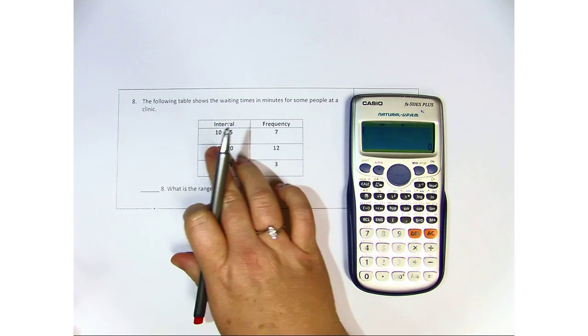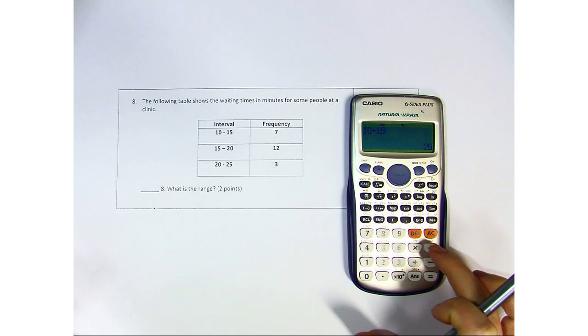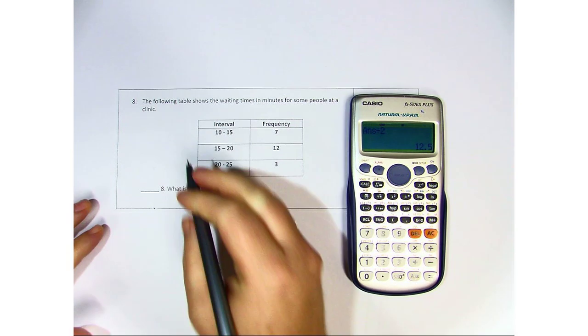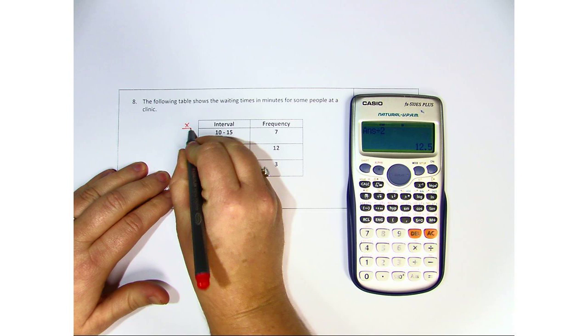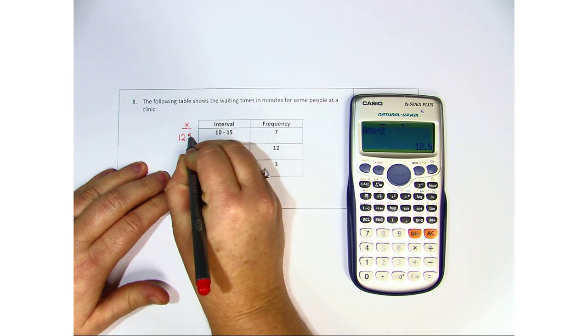You need to add the two numbers together, 10 plus 15, and then divide by 2. So our data that we're going to look at is 12.5.